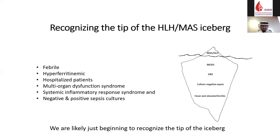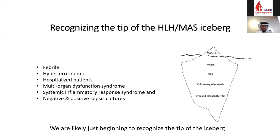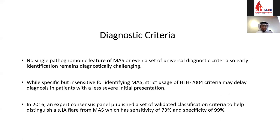Are we now starting to recognize the tip of the iceberg? Not only in pediatric rheumatology, but if you have a hospitalized febrile patient with multiple organ dysfunction syndrome, SIRS, or severe inflammatory response — with negative or even positive cultures — and you find very high ferritin, these patients may be predisposed to a cytokine storm. We always need to think about underlying triggering factors causing MAS or secondary HLH.